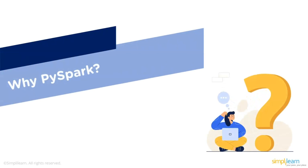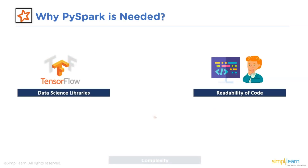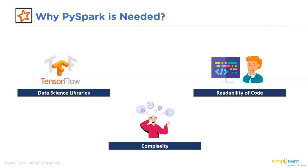Now we have a better understanding of PySpark and its features, so let's understand the need of PySpark. It's crucial to understand why and when to use Spark with Python. The first factor is Data Science Libraries — you don't have to worry about visuals or data science frameworks with the Python API. The next factor is Readability of Code. Although internal modifications are simple in the Scala API, the Python API offers superior readability, maintenance and familiarity. Regarding Complexity, in contrast to Scala which produces verbose output and is viewed as complicated, the Python API provides an accessible, simple and comprehensive interface.